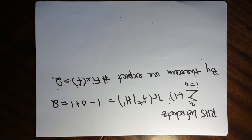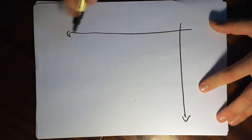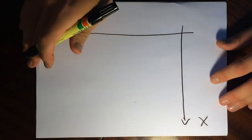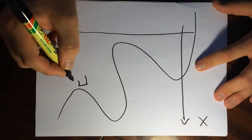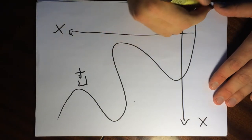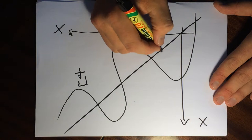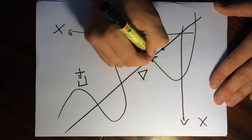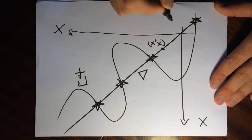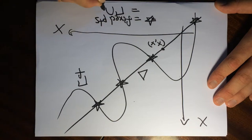Let me describe how we're going to compute the fixed points. Here's X cross X, and we have some map F — this is the graph of F. To find the fixed points, we need points where the point is not moved at all. Those points lie on the diagonal, which consists of points of the form (X, X). So the fixed points are precisely the points where the graph intersects the diagonal.